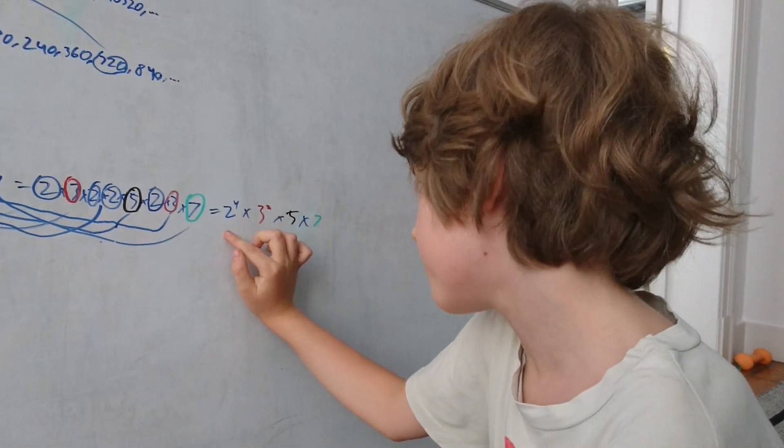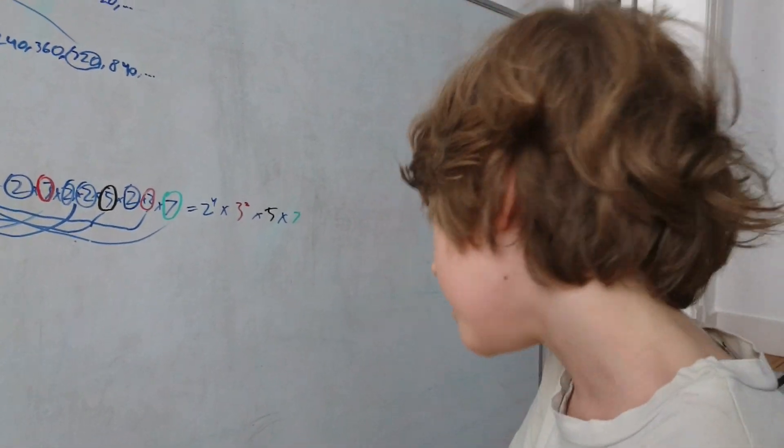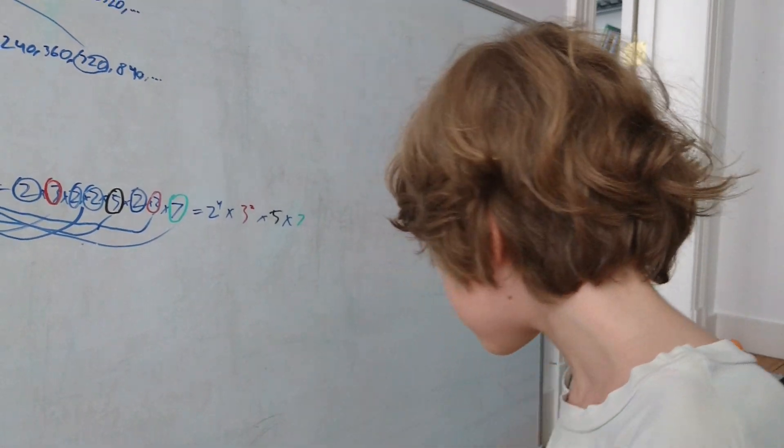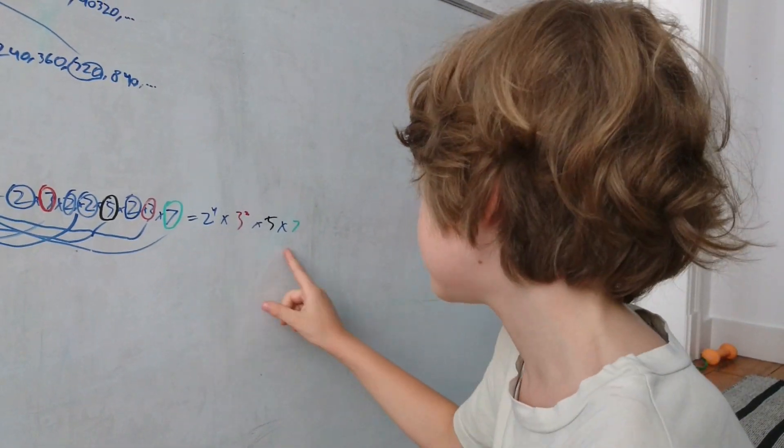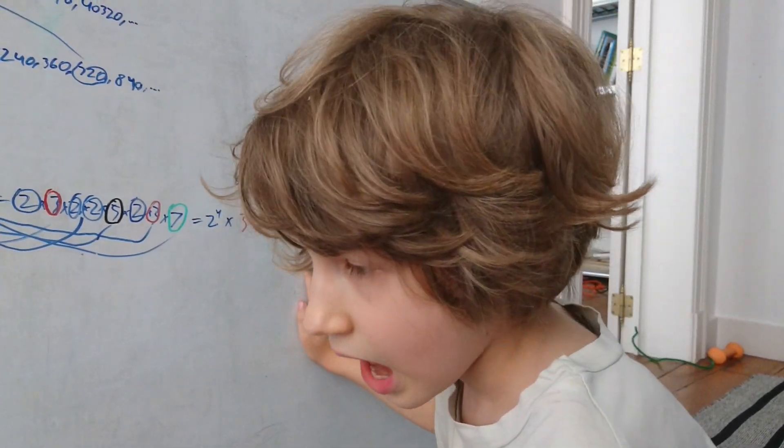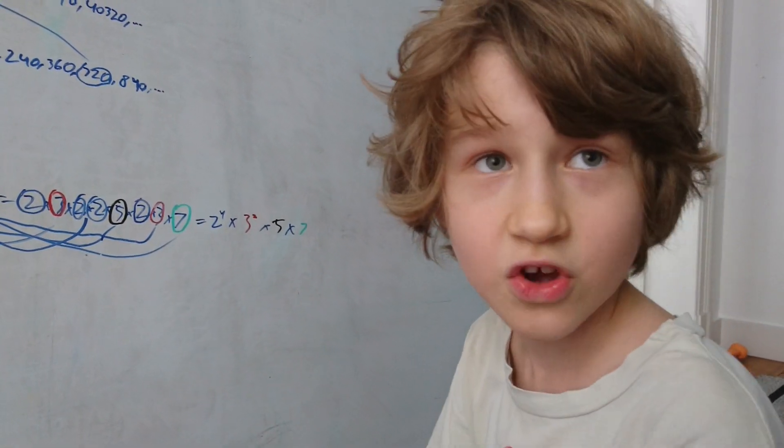I just watched. Like 2 to the 4 times 3 squared times 5 times 7 is a prime factorization of 5040. But now look at this: 2, 3, 5, 7, all possible primes are in here. All possible primes at least less than a given value.